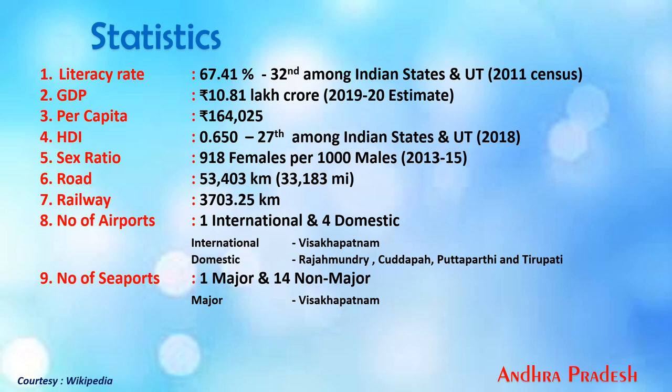The sex ratio is 918 females per thousand males as per the 2013-15 survey. Roadways cover 53,403 kilometers and railways 3,703.25 kilometers. There is one international and four domestic airports — Visakhapatnam being the international one, and Rajahmundry, Kadapa, Puttaparthi, and Tirupati are the domestic airports. There is one major seaport and 14 non-major seaports, with Visakhapatnam being the major seaport.